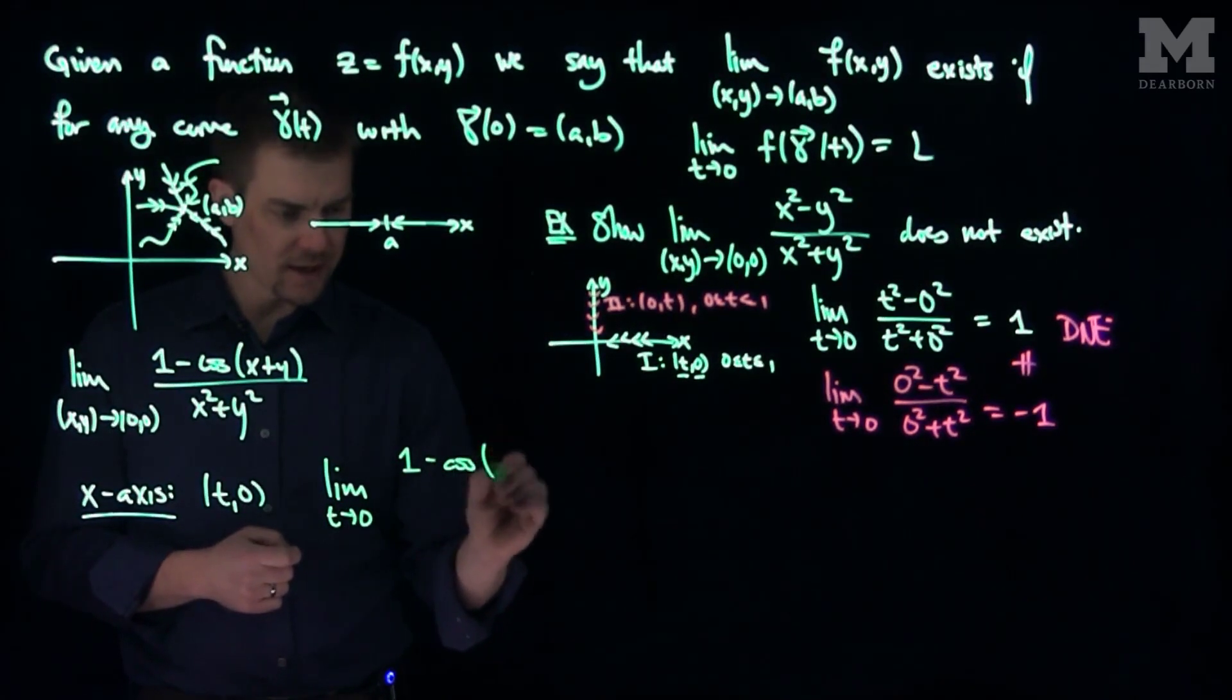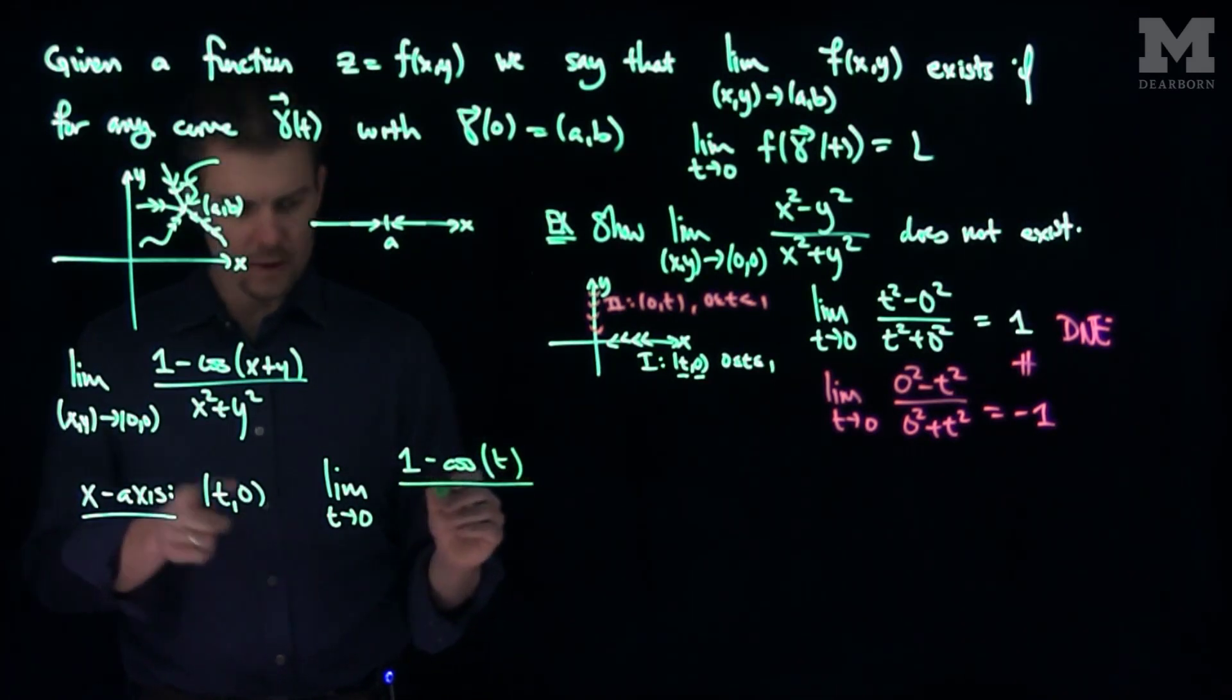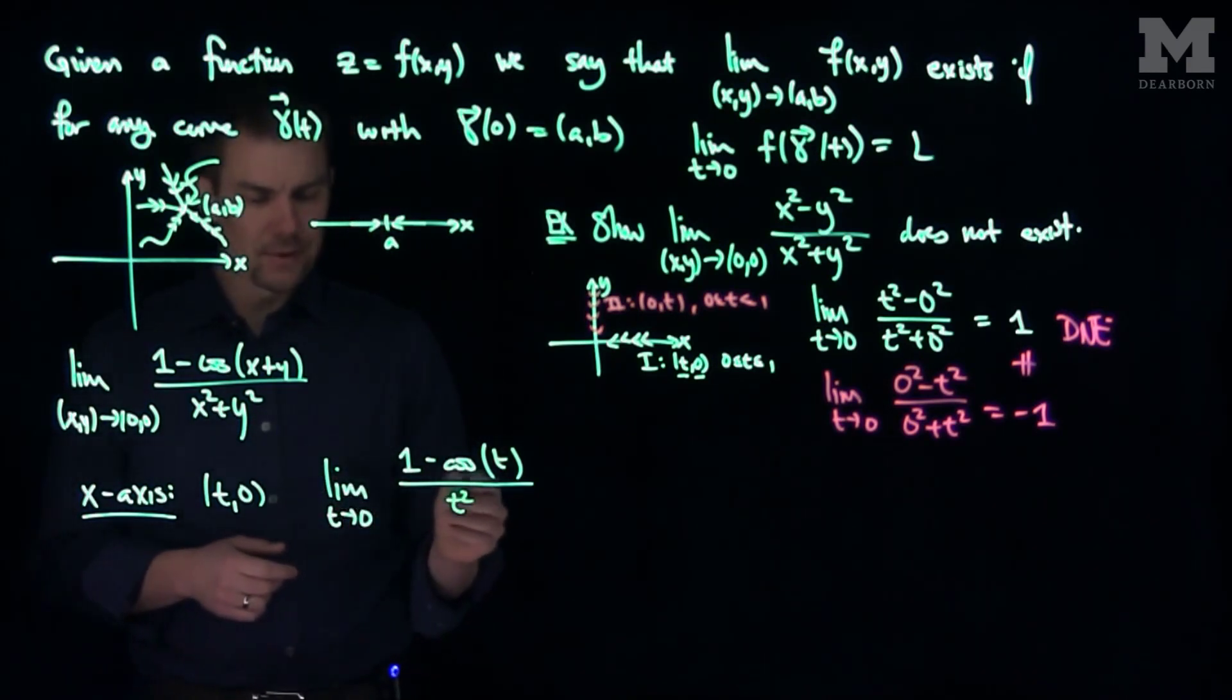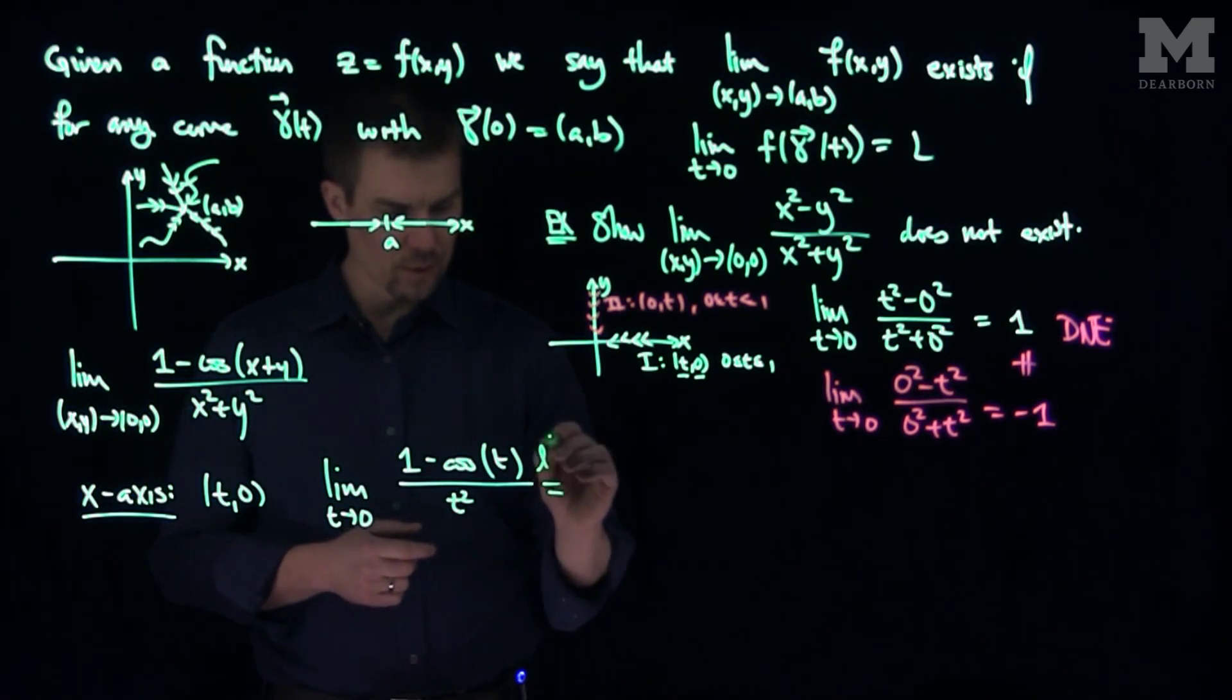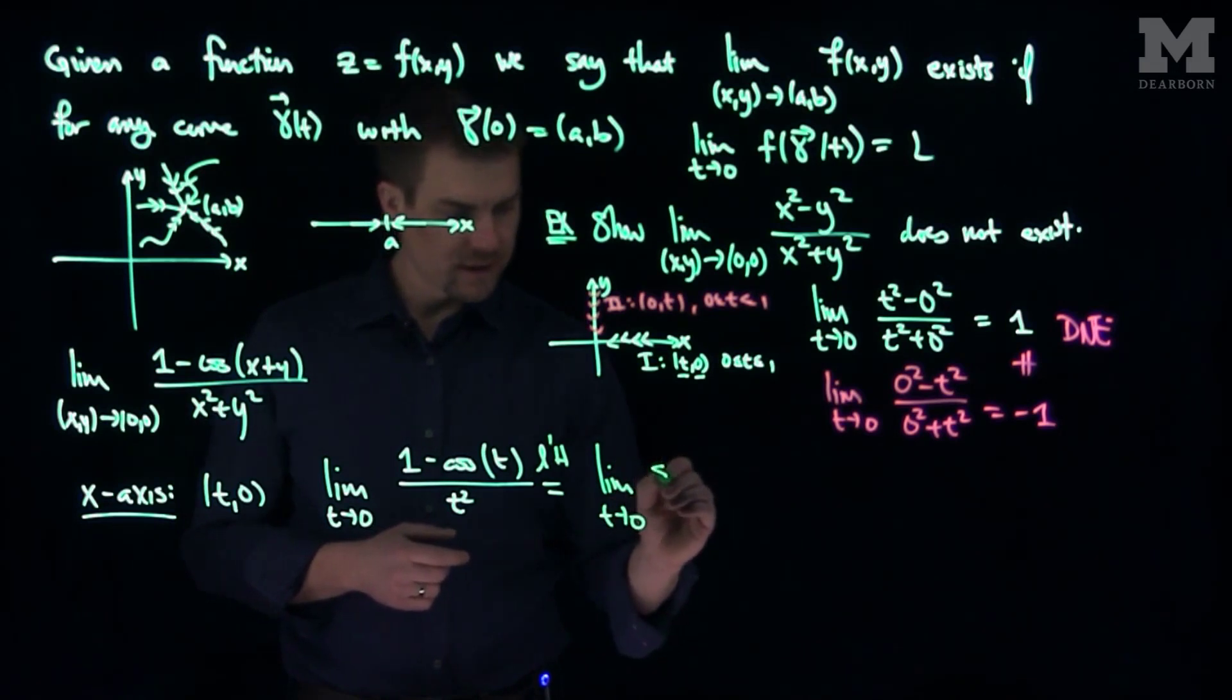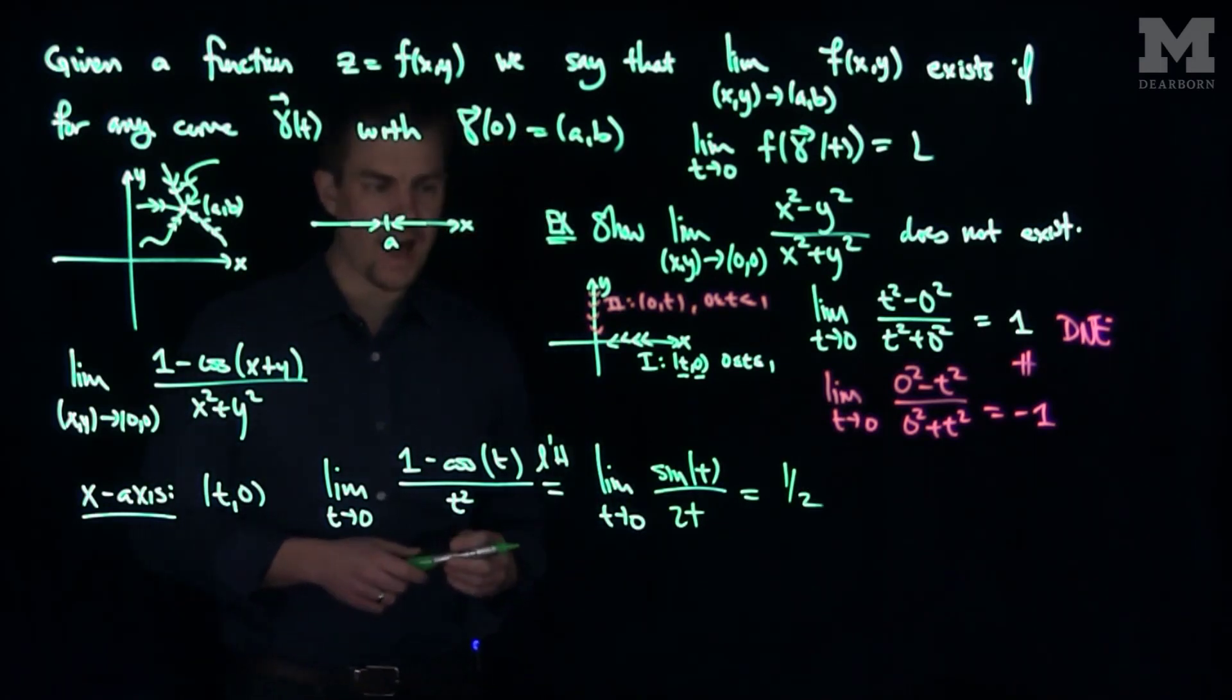Because that's the limit as t goes to 0 of 1 minus the cosine of x is now equal to t over, over x is t, so I'm going to have a t-squared. And so what happens over here is I'm going to have a 0 over 0, so we can use L'Hopital's Rule. So if I use L'Hopital's Rule, this will be the limit as t goes to 0 of sine t over 2t, and we see that this limit is equal to 1 half.